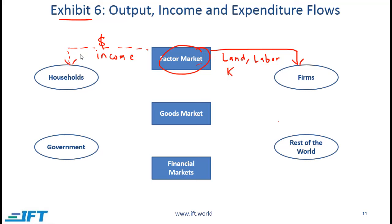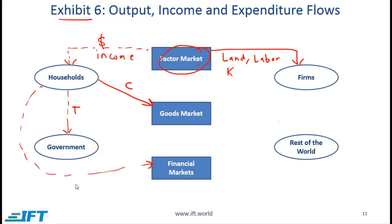There are three ways in which household income can be spent. One is consumption — households go to the goods market and buy goods. Households also pay taxes, denoted by T. And households save: money put into the financial markets is savings, denoted by S. Firms borrow money — or raise equity capital — from financial markets and use it for investments.